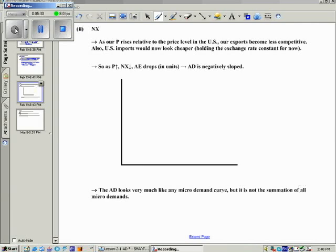A second way of deriving aggregate demand is to look at net exports. If the Canadian price level rises relative to the US price level, because the US is our main trading partner, our exports become less competitive. The US would buy less from us. As a result, when our price level rises, our net exports will drop because our exports drop. The Americans want to buy less from us and end up buying less from us. So once again, we get price level increasing and a rather weak aggregate demand.